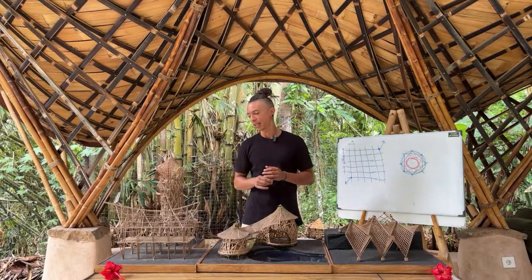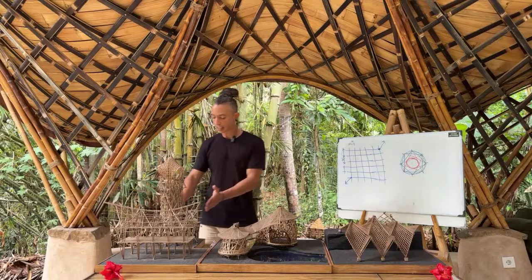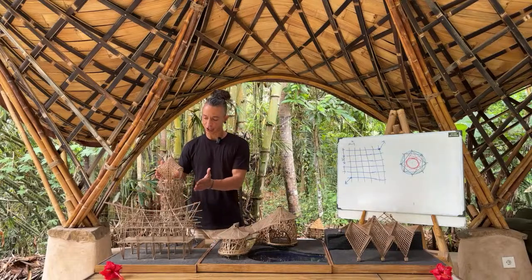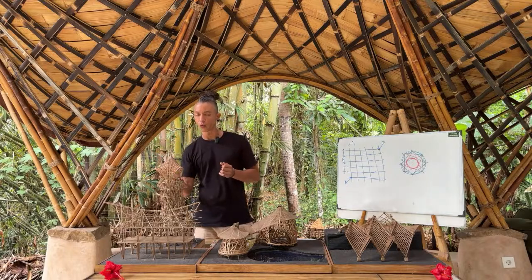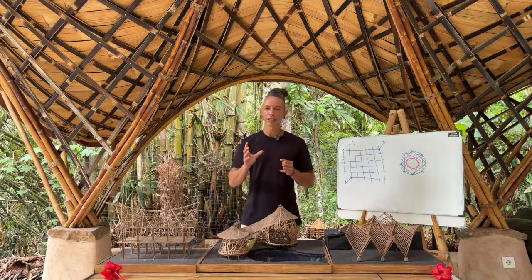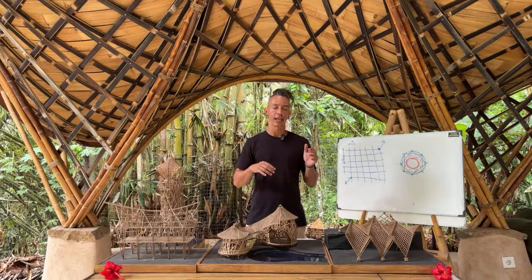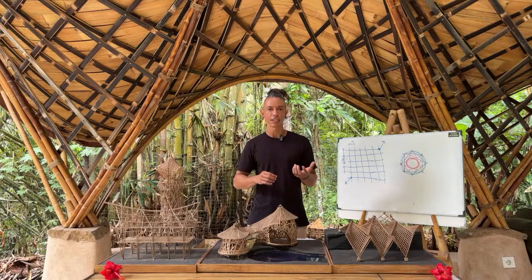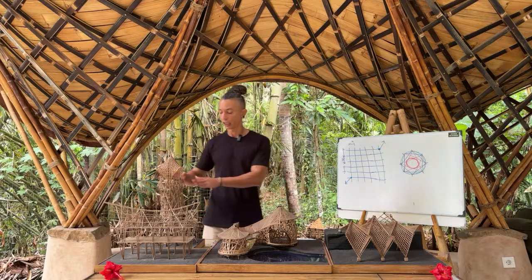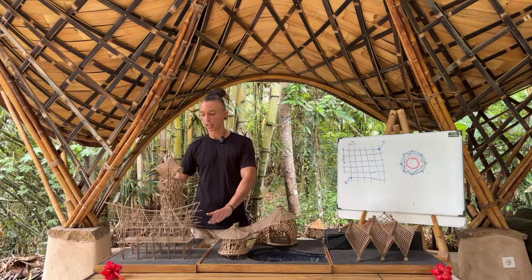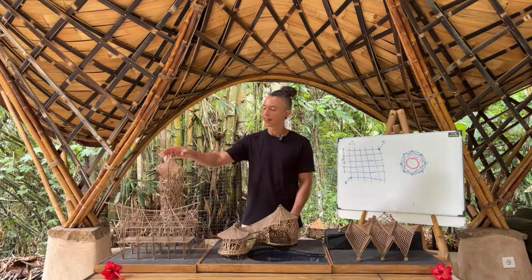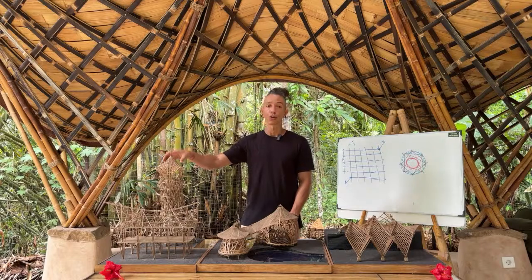This tower was built with participants at Bamboo U. It creates a very interesting shape and is then covered by a surface wrapped all around it. You can also start playing with different structural elements and structural systems in the same project. For example, what you can see here in the Princess Tower: you have a reciprocal tower and on top of that a grid shell.